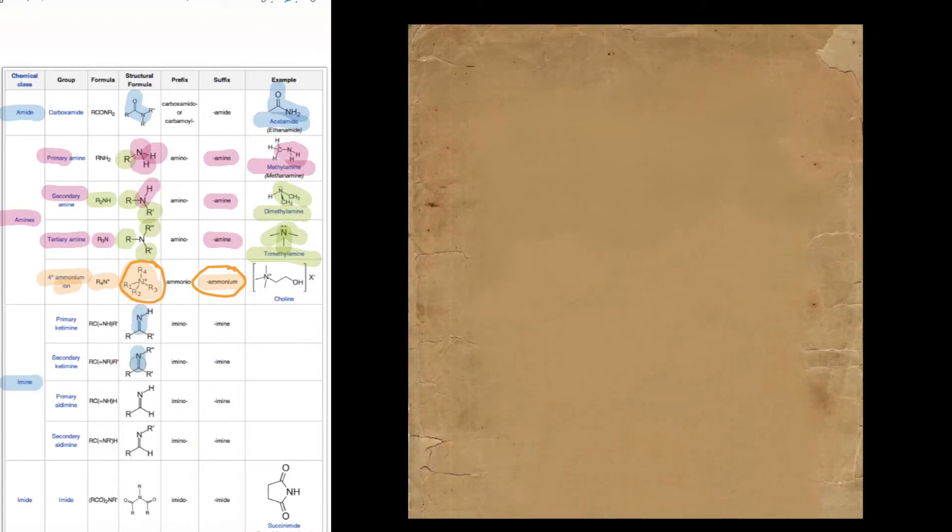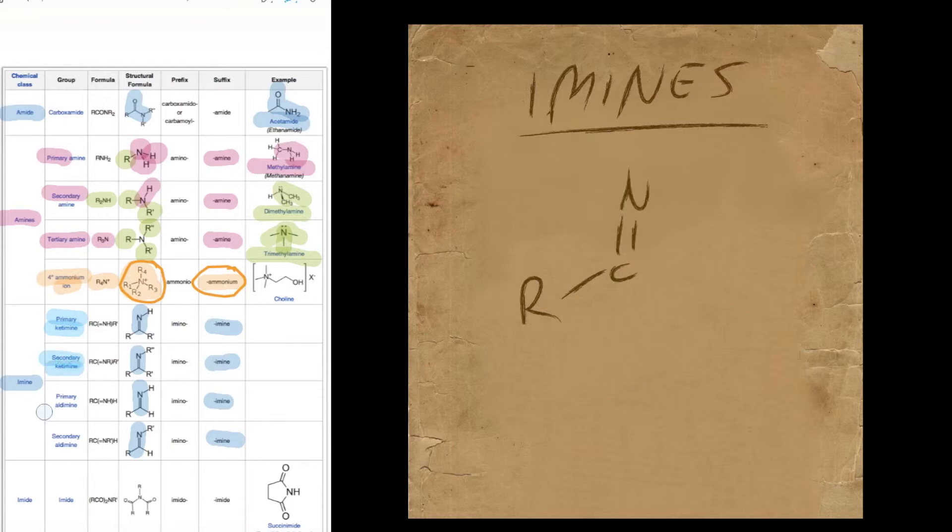Now the last group in the series here shouldn't turn up too much at A-level standard, but it certainly will turn up a lot in reaction mechanisms: the imines and the imides. Looking at the imines, there are four different types based on whether the hydrogen is connected to nitrogen or whether the carbon's actually got two alkyl groups or just one alkyl group associated with it.